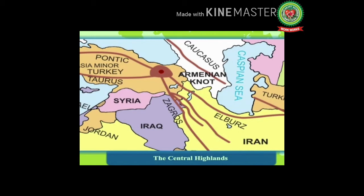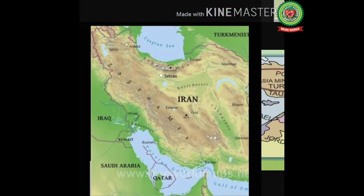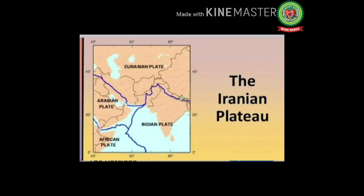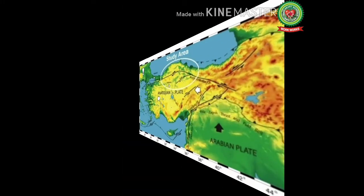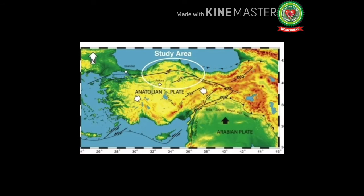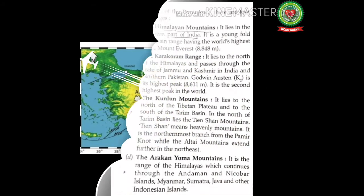The Iranian plateau geologically refers to the geographical area north of the great folded mountain belts, resulting from the collision of the Arabian plate with the Eurasian plate. The Plateau of Anatolia lies between the Pontic mountains in the north and the Taurus mountains in the south, also known as Asia Minor. Most of Turkey lies on this plateau.